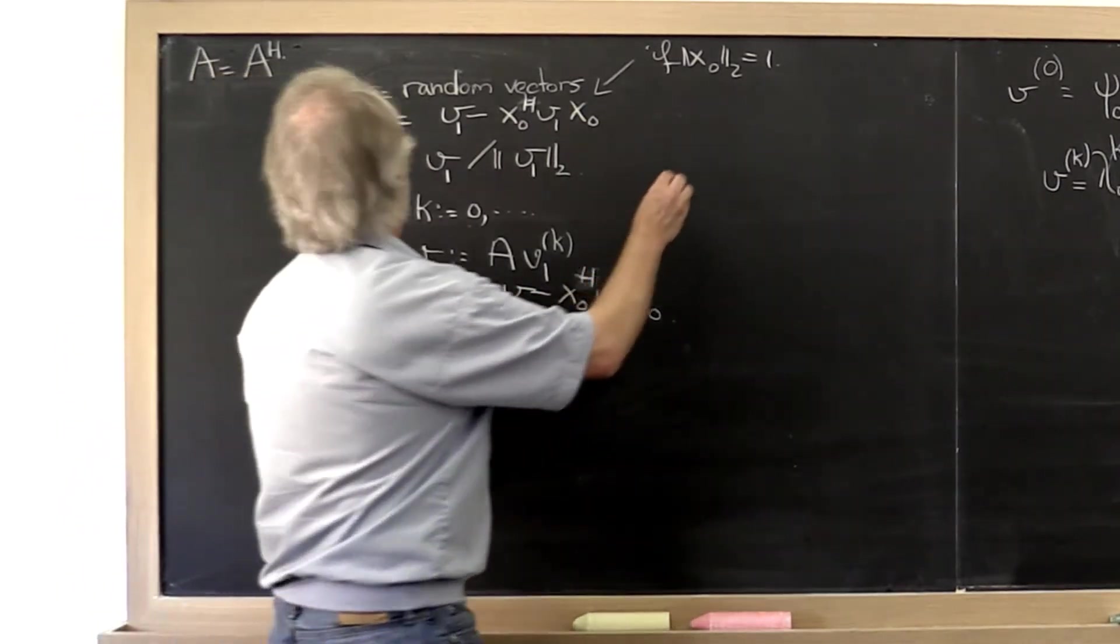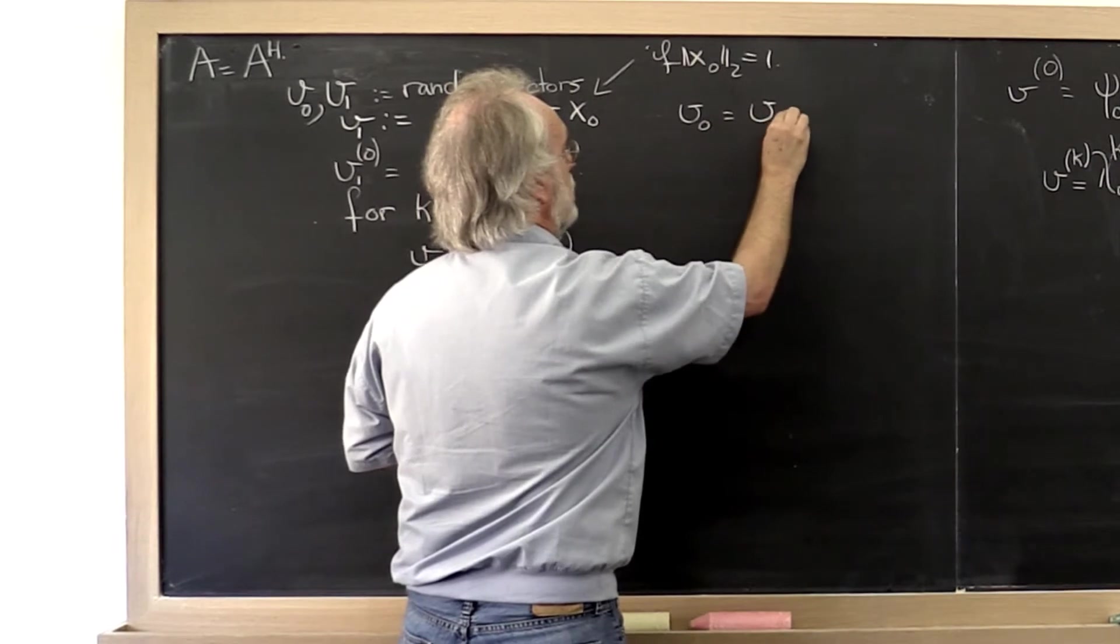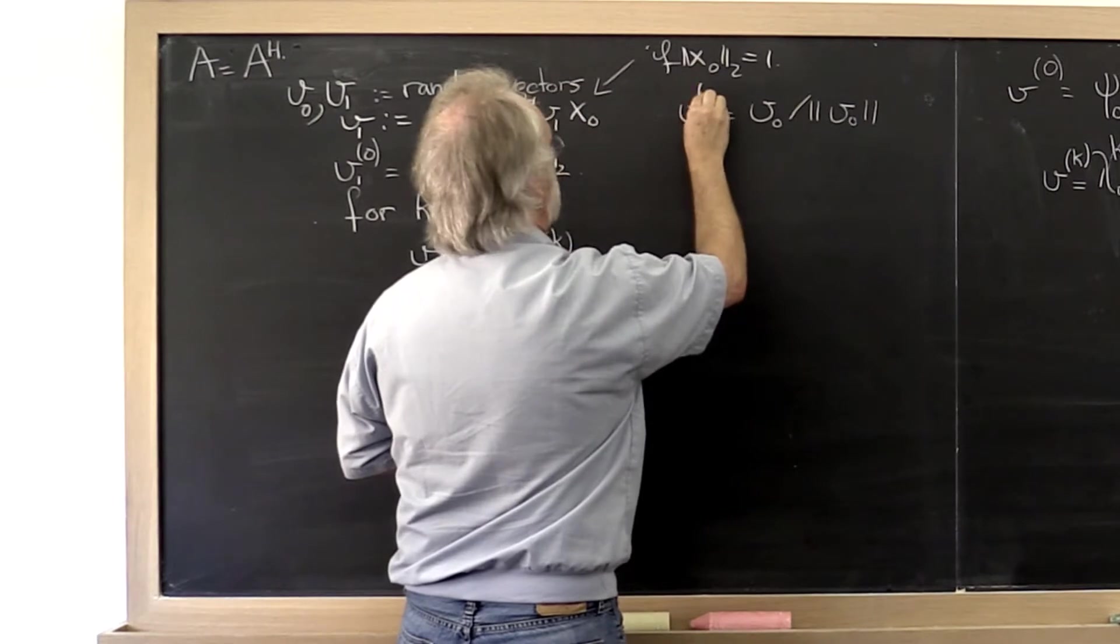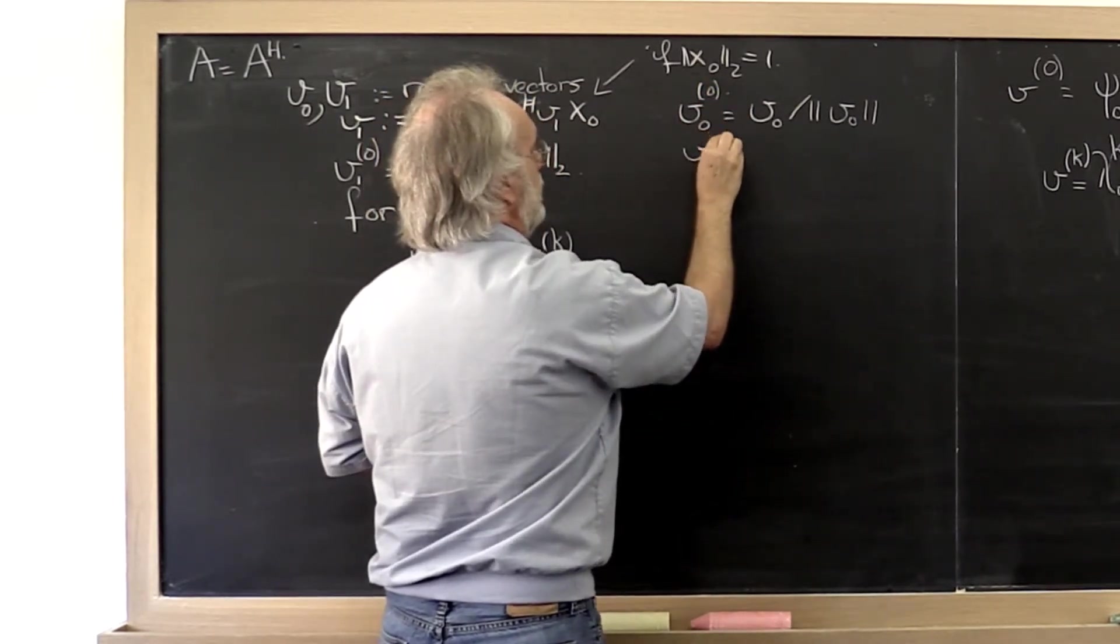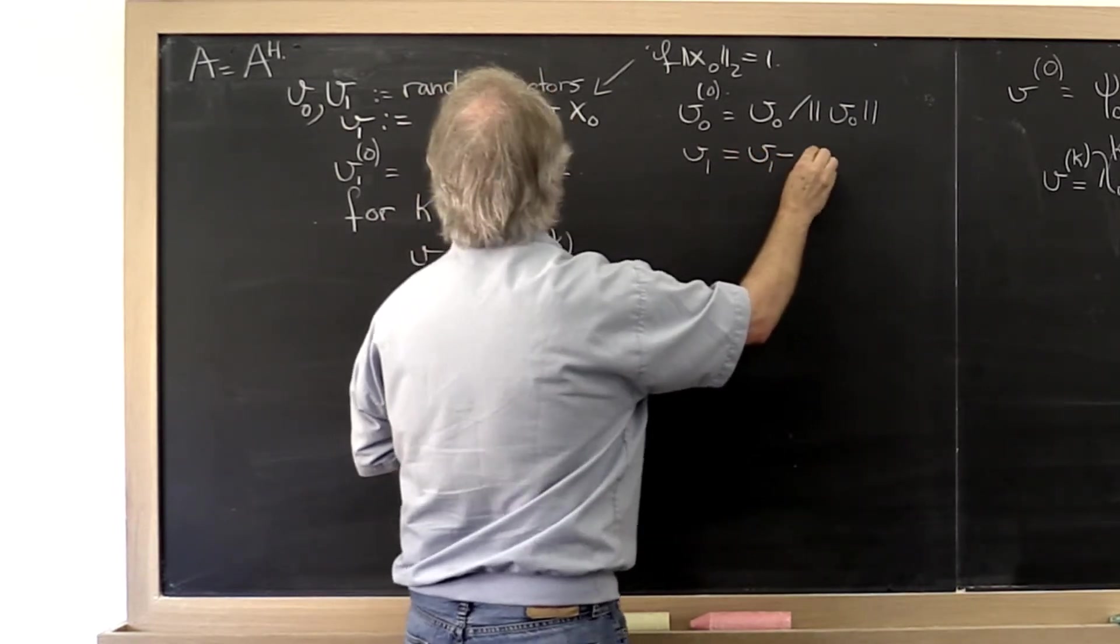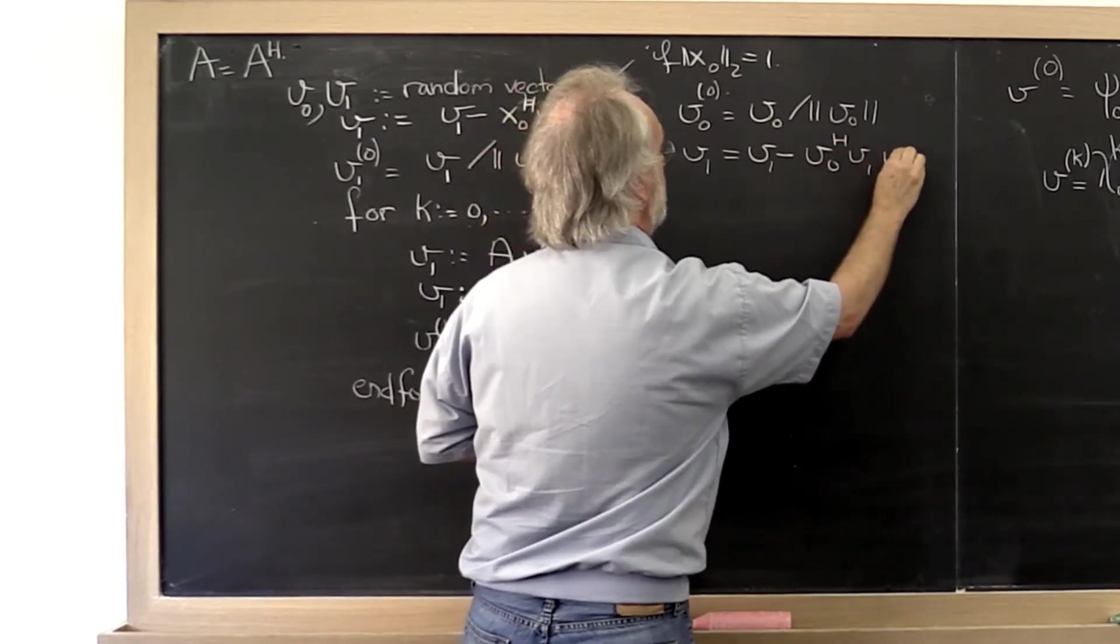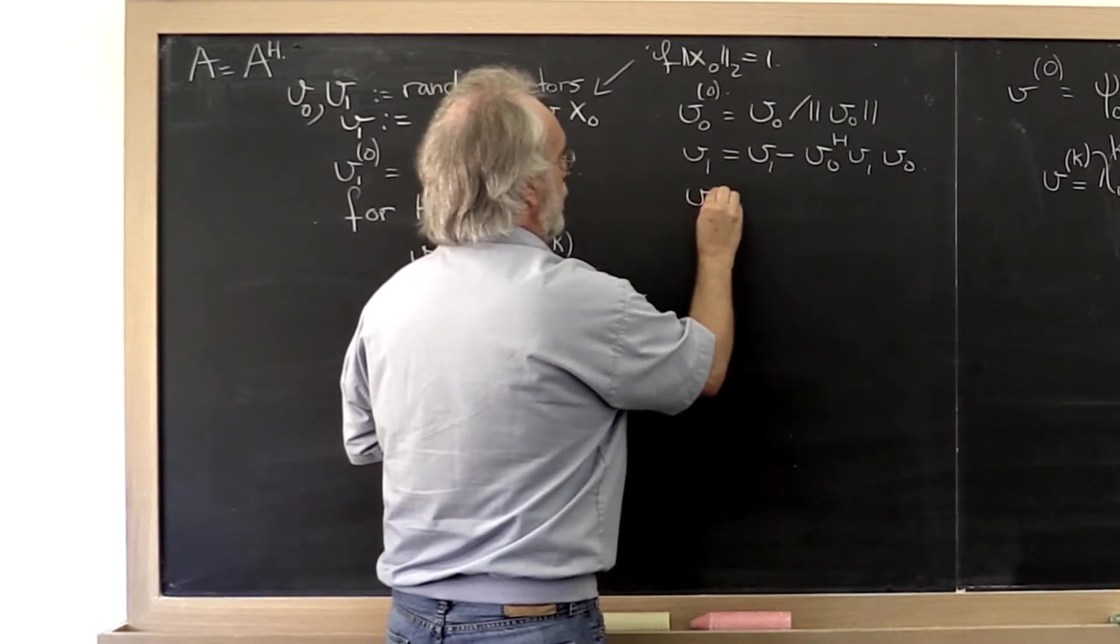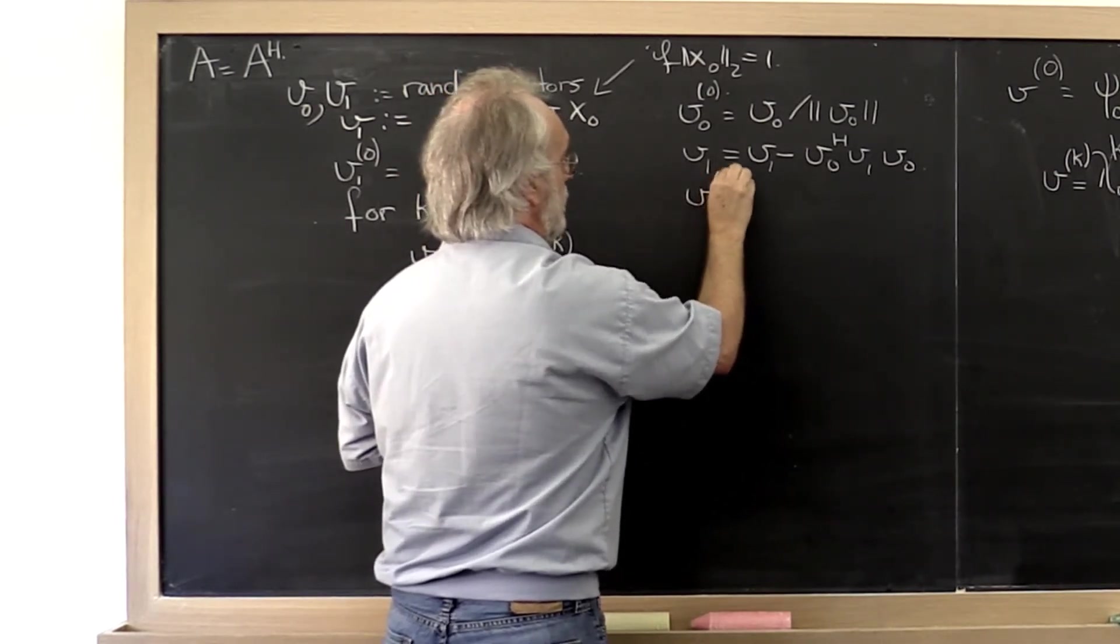What we're saying here is let's take v0 and make it of length 1, and make that the first iteration. And then let's take v1, let's subtract out the component in the direction of v0.